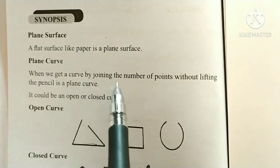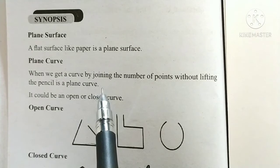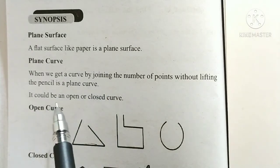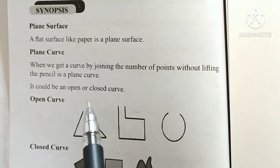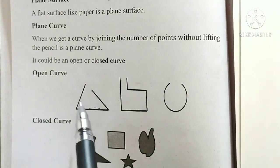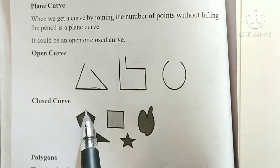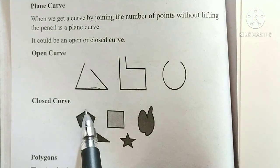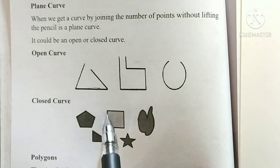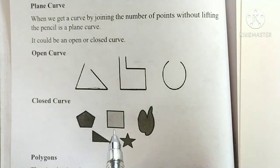When we get a curve by joining a number of points without lifting the pencil, it is a plane curve. It could be an open or closed curve. An open curve does not end at the starting point. A closed curve is one where you start from one point, cover all line segments, and return to the same starting position.